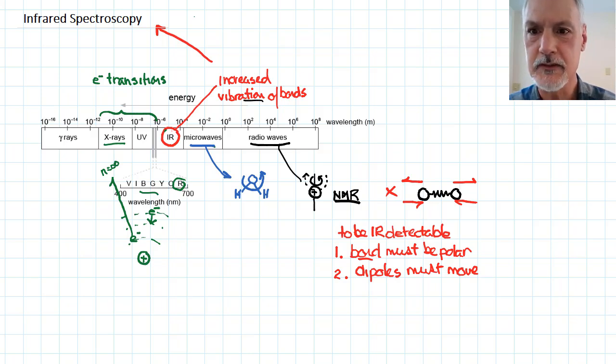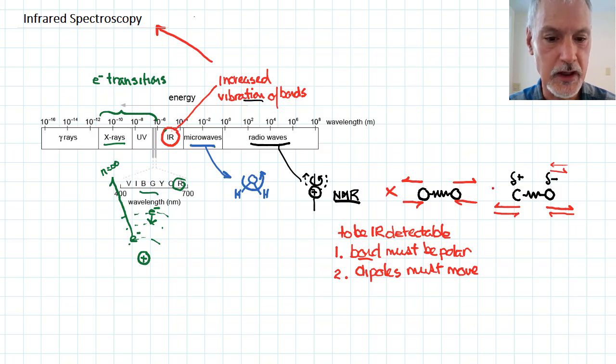If, on the other hand, we have a bond with carbon double bonded to oxygen, in that situation, the carbon will tend to lose its electrons and develop a slightly positive charge, and the oxygen a slightly negative charge. When this starts to vibrate out and then in turn back in, we would see these dipoles move. They would move out and in. And as a result, this type of bond would be infrared detectable. So bonds must be polar and they must vibrate in such a manner that their dipoles move to be detectable.